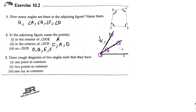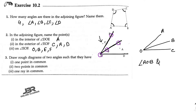Next: draw a rough diagram of two angles such that they have one point in common. You can draw it like this — suppose this is named A, O, B, C. So angle AOB and angle BOC have a common point, that is O.